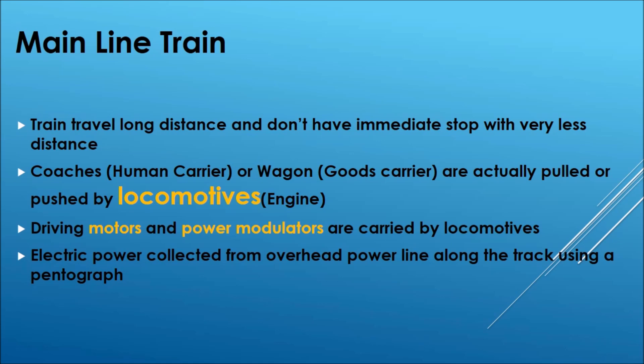In mainline trains, coaches — which carry humans — and wagons — which carry goods — are connected together and pulled or pushed by a locomotive. The locomotive is the main part of the train, also called the engine. It may be a diesel engine, steam engine, or electrical engine.